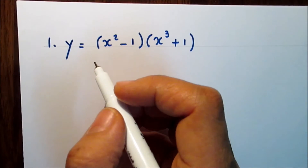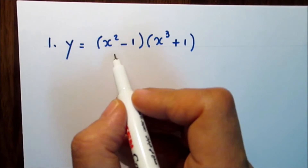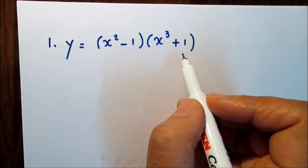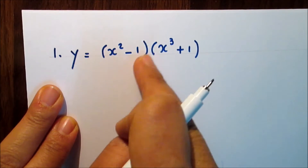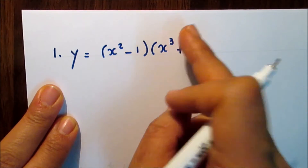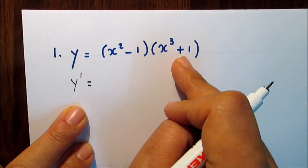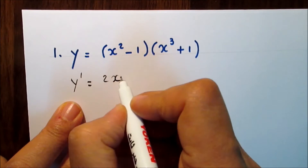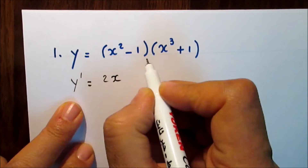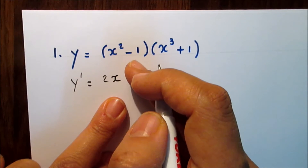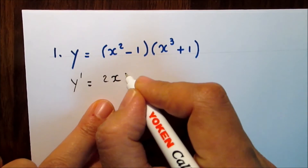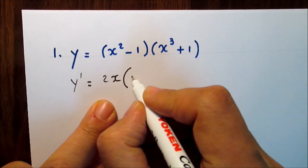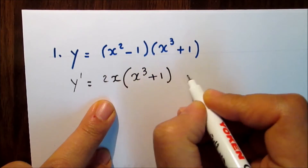The first example: find the first derivative of y equals (x² − 1) times (x³ + 1). We have the product of two functions — this is the first function and this is the second function. Take the derivative of the first function times the second function. The derivative of x² is 2x, and the derivative of negative 1 (a constant) is 0, so the derivative of the first is 2x, times the second function (x³ + 1).